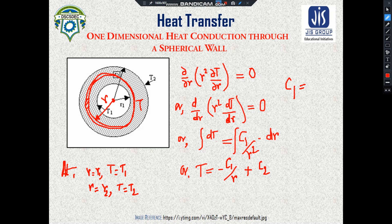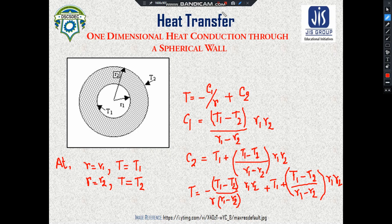Substituting the boundary conditions gives: T1 = −C1/r1 + C2 and T2 = −C1/r2 + C2. Solving these equations yields C1 = (T1 − T2)/(1/r1 − 1/r2) · (r1·r2), and C2 = T1 + (T1 − T2)·r1·r2/(r1 − r2). We now put these values of C1 and C2 into the fundamental temperature distribution equation and simplify.